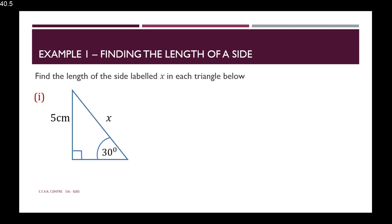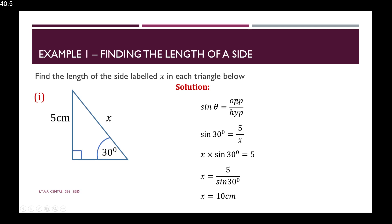Example 1: Find the length of the side labeled x in this right-angle triangle. We have the angle 30 degrees, 5 centimeters, and x. Since x is opposite the right angle, x is the hypotenuse, and 5 centimeters is opposite the 30 degrees, so we have the opposite side. We need a formula with opposite and hypotenuse — that's sine theta. So sine 30 equals 5 over x. Rearranging, x equals 5 divided by sine 30, which gives us 10 centimeters.